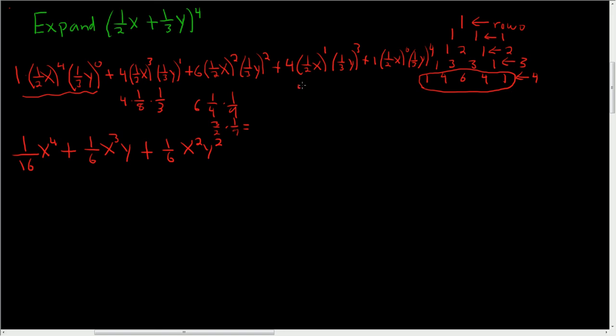Here we have 4 times 1 half times 1 9th. No, times 1 27th. Easy to mess up there. So this will be 2 over 27. Yeah, I don't sound very confident. 2 over 27. x, y cubed.